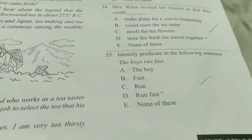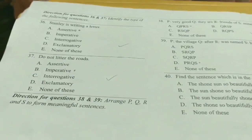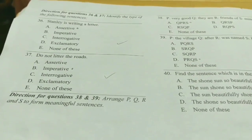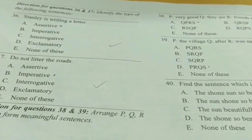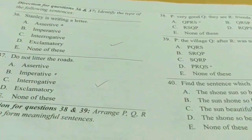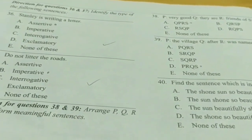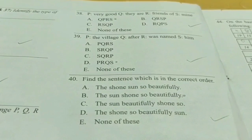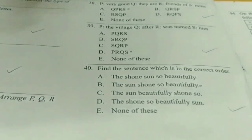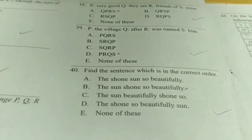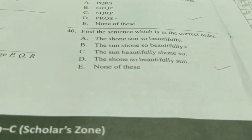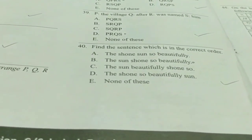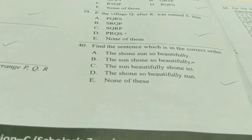Questions 35, 36, and 37 — we have to identify the type of sentence. Chapter 6 has information about subject, predicate, and types of sentences, just practice and you will get it. Questions 38 and 39, we have to arrange PQRS to form a meaningful sentence — Chapter 7 has questions related to this. For example: 'They are very good friends of mine.' Question 40 — find the sentence which is in correct order, again in Chapter 7.